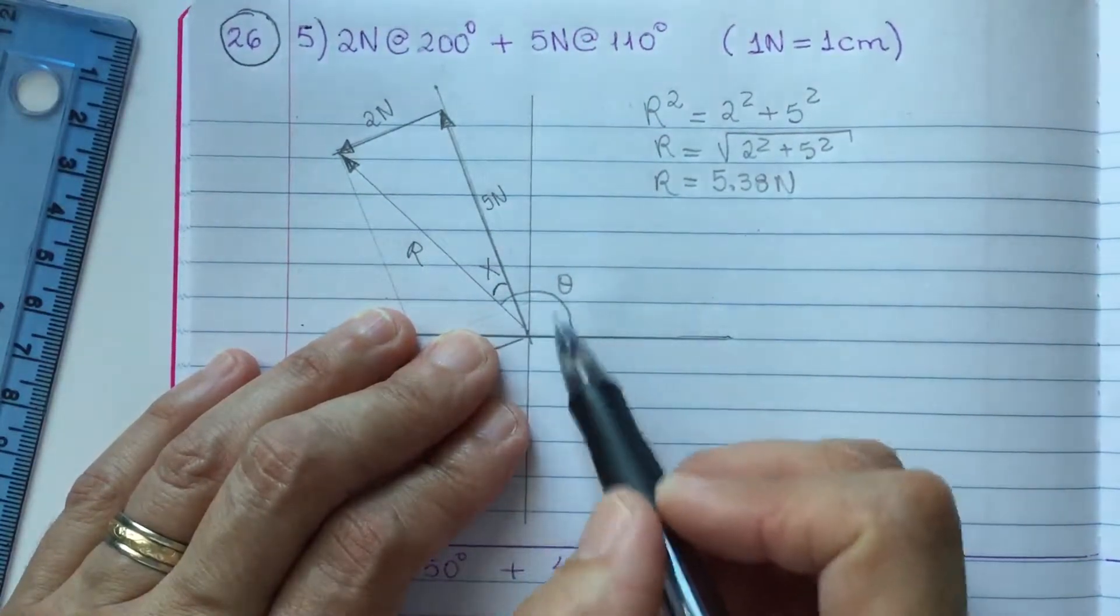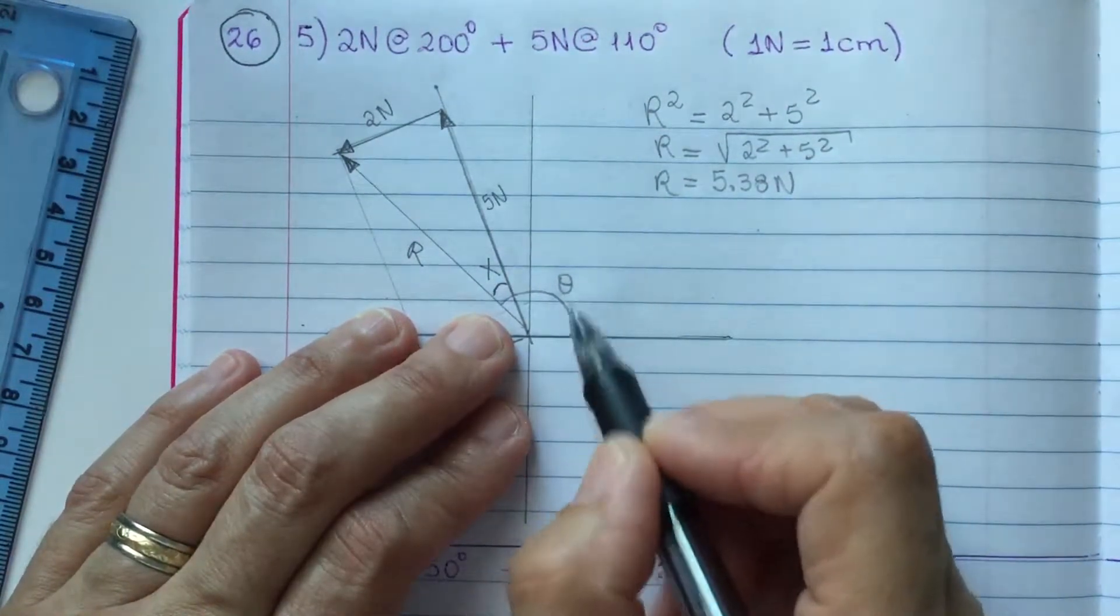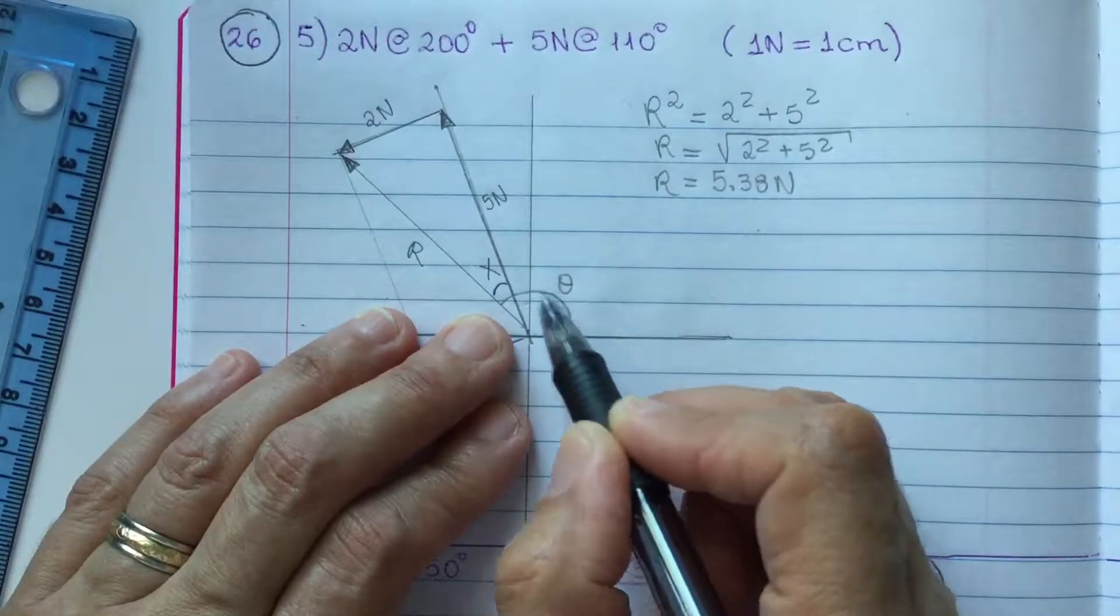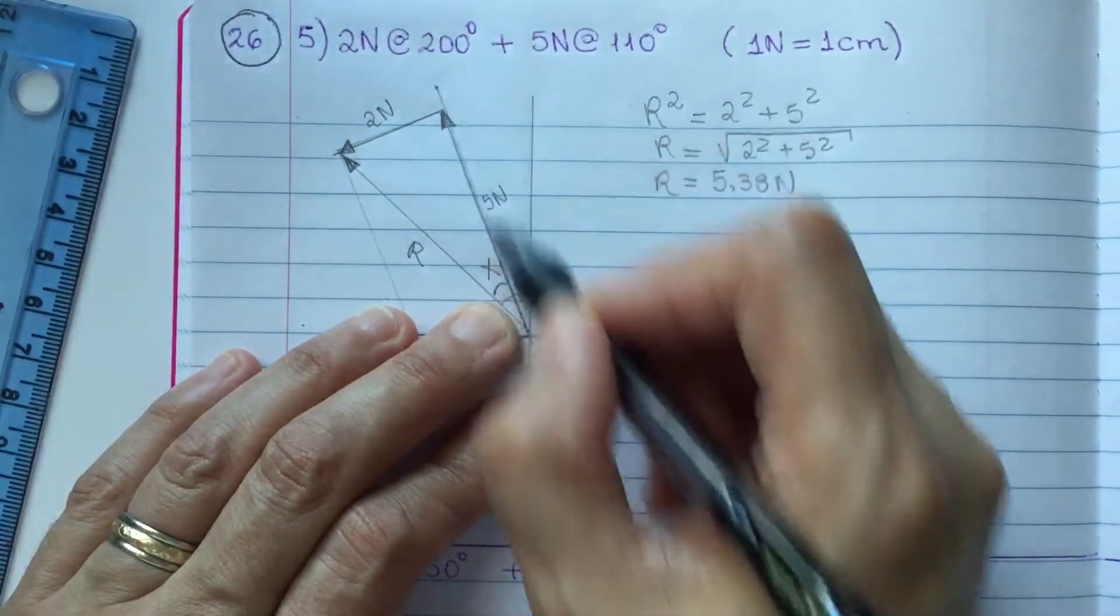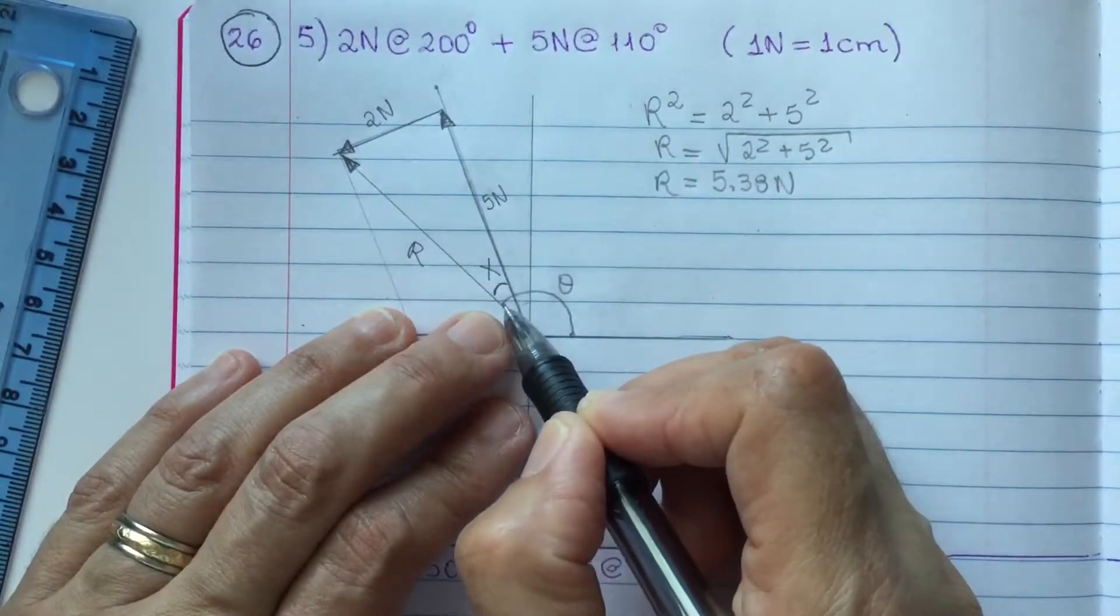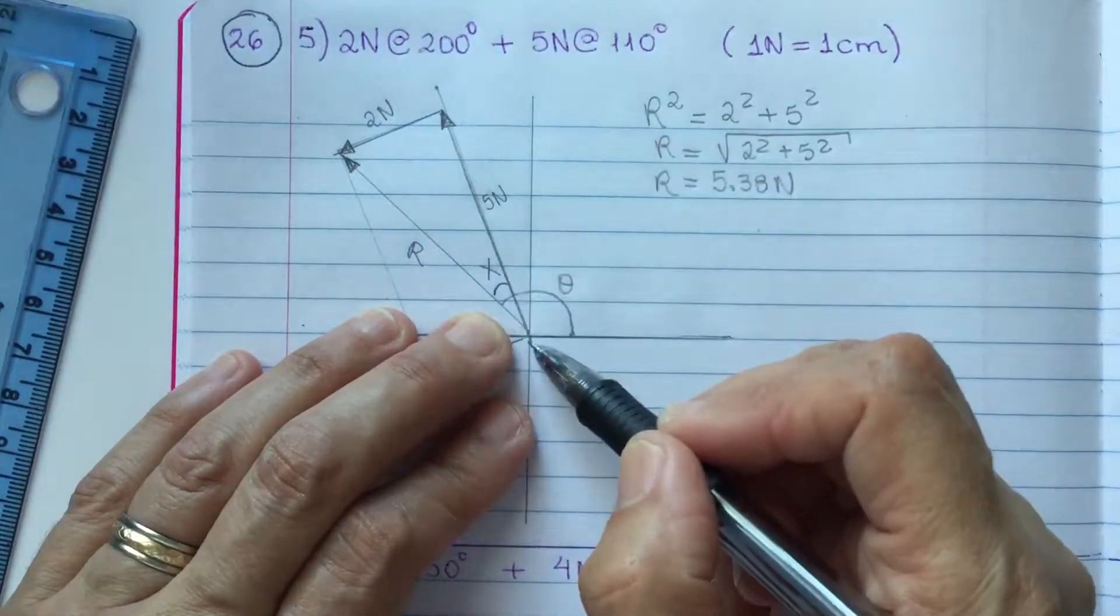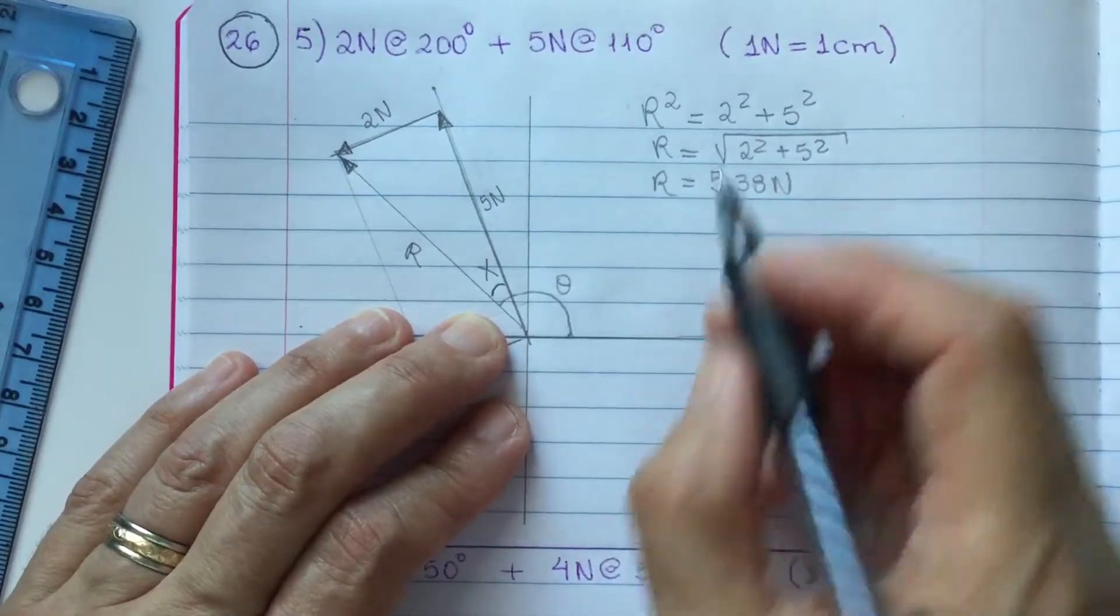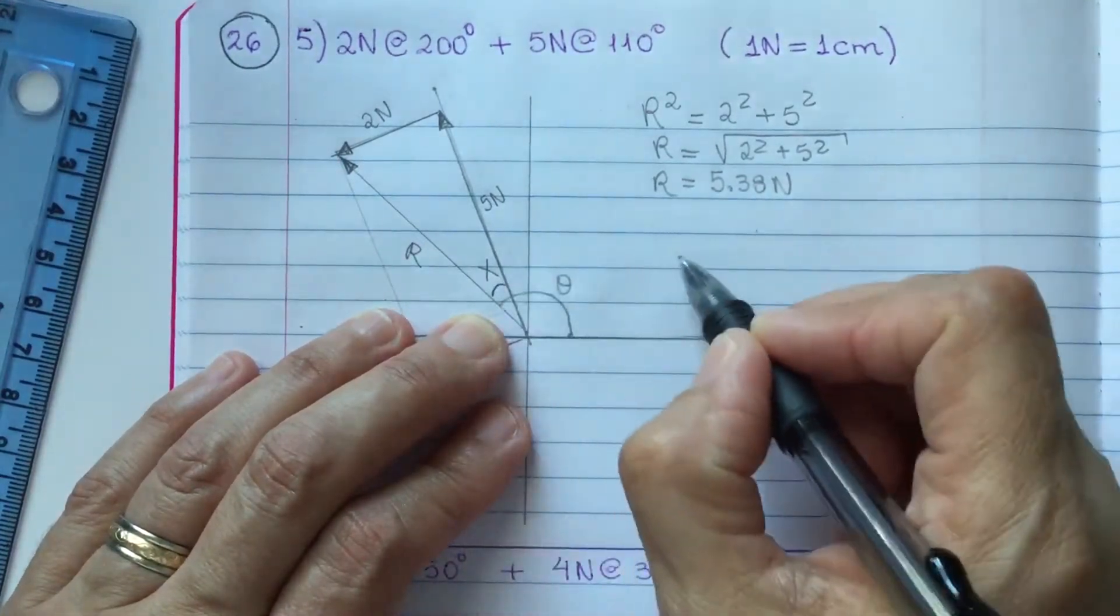So, it's very easy to figure out that my theta is, from here to here, I know this location is 110 degrees plus my X will give me the location of R.